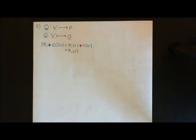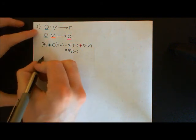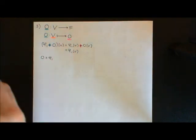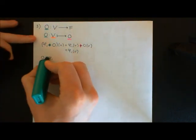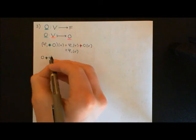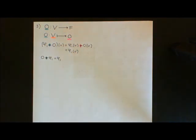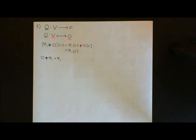Hopefully you can appreciate that if we did it the other way — zero map plus φ1 — that would also equal φ1 back again. So this truly is the additive identity in my dual vector space: this zero map that maps all elements of our original vector space, capital V, onto the additive identity in the field, the zero element in the field. So that's my additive identity, and we can tick that one off.